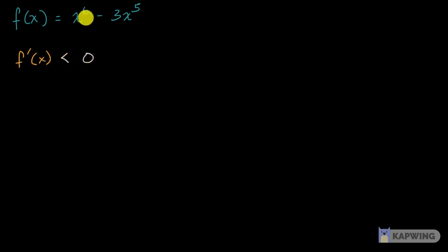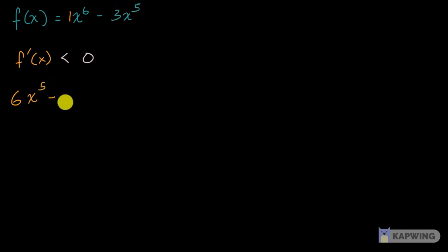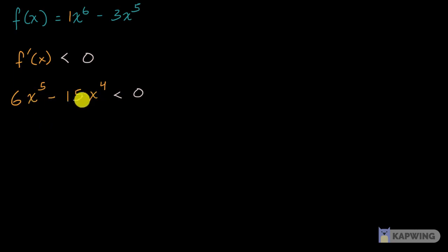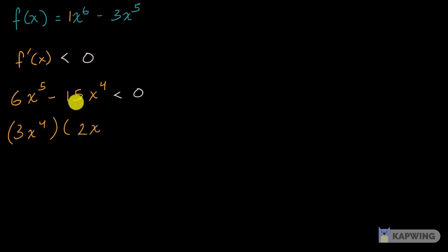So what is f prime of x? Applying the power rule: bring the 6 out front to get 6x to the fifth, then minus — bring the 5 times 3 — minus 15x to the fourth. We need to figure out over what intervals this is less than zero. Both terms are divisible by 3x to the fourth, so let's factor that out: 3x to the fourth times (2x minus 5) has to be less than zero.